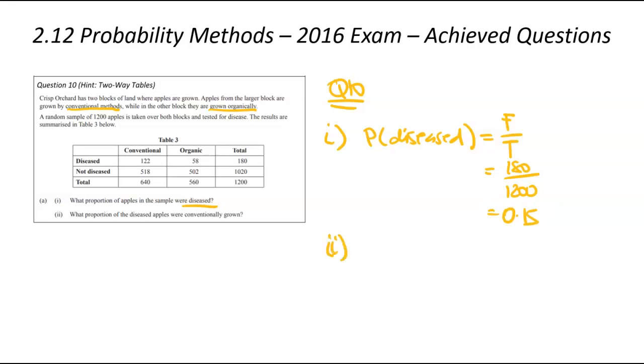We're now going to move on to II. What proportion of diseased apples were grown conventionally? This time around, we only care about those diseased apples. So, we're trying to find the probability of con, so I'm going to write con for conventional, given they were diseased. And I'll just write dis for diseased. We're going to write F over T. We only care about the diseased apples. So, that's going to be the grand total. How many diseased apples did we have? 180. And of those 180 apples, how many of them were conventionally grown? That's the 122 up there. You plug that into your calculator. You're going to get 0.6778. And that there had a 4DP rounding.